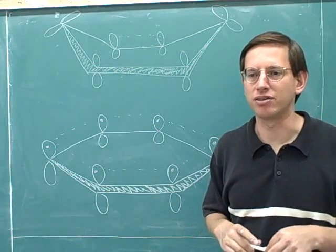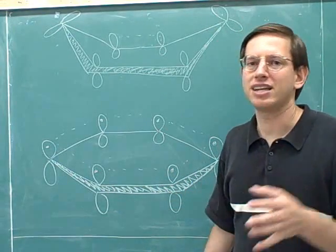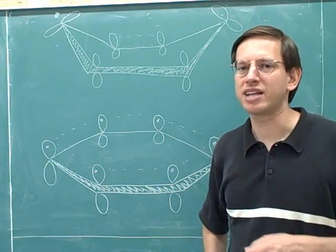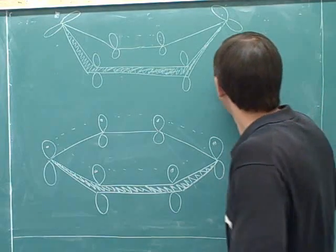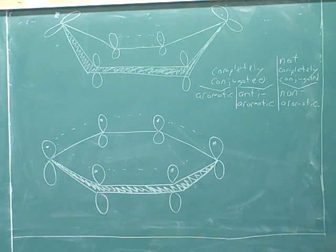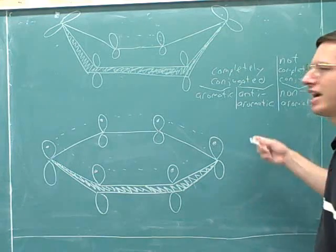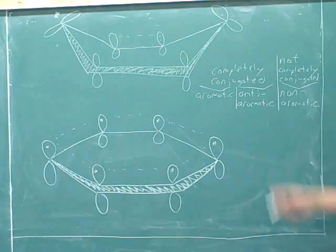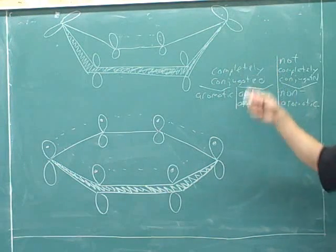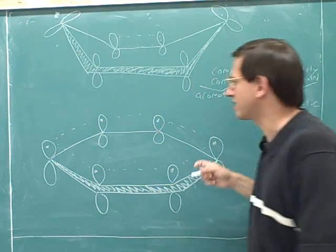If the molecule were not flat, it couldn't be completely conjugated either. So technically, we don't actually have to include the word 'flat' in the definition of aromatic or anti-aromatic, because that's actually redundant. When a molecule is completely conjugated, it's either aromatic or anti-aromatic. If it's not completely conjugated, it's just non-aromatic — a regular molecule. If we know a molecule is completely conjugated, we know it must be planar, because it couldn't be completely conjugated in the first place unless it was flat — we can't get side-to-side overlap of all atoms in the ring otherwise.